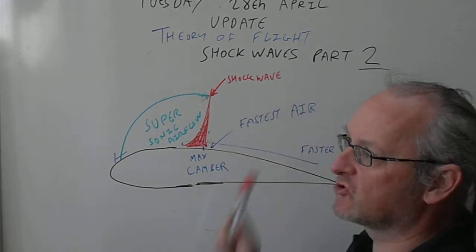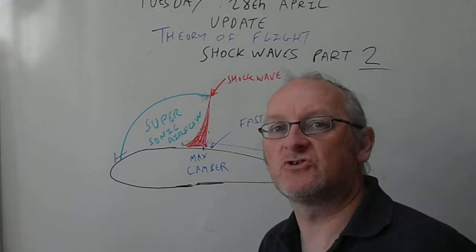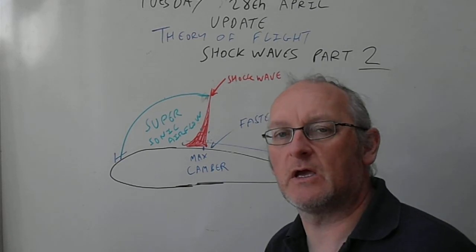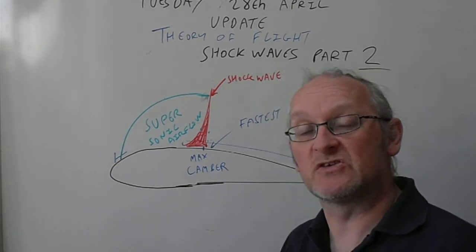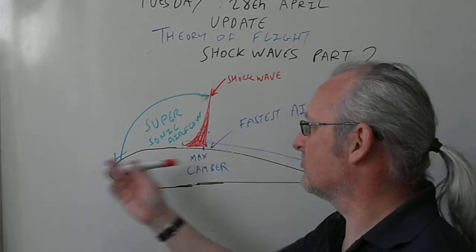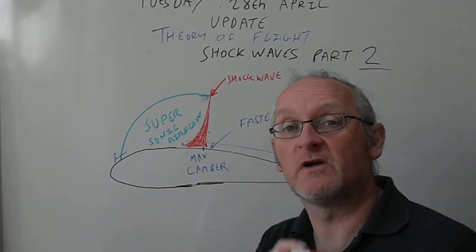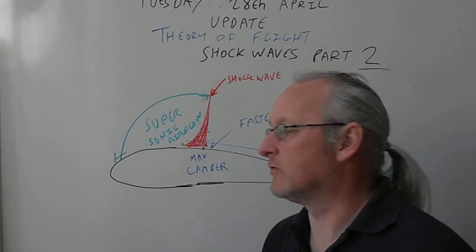Okay, and that is a normal shock wave. When we're coming to engines and stuff for the distinction part, we'll start talking about normal and oblique shock waves. This is a normal shock wave. It is 90 degrees to the relative airflow.